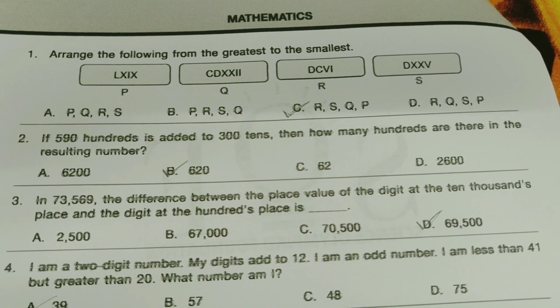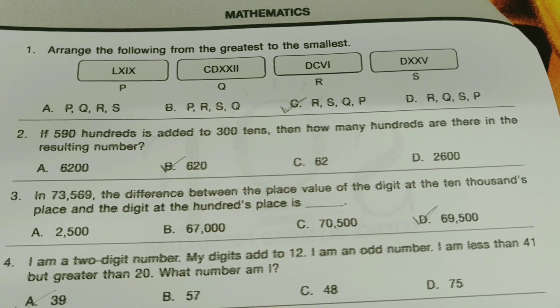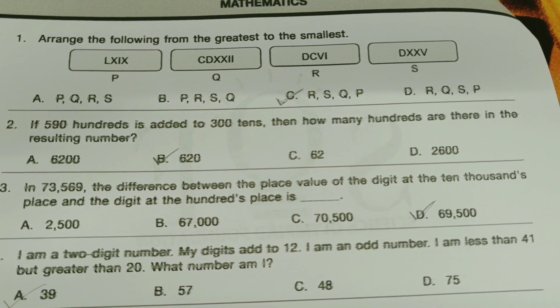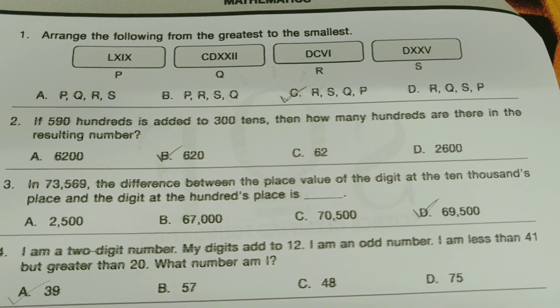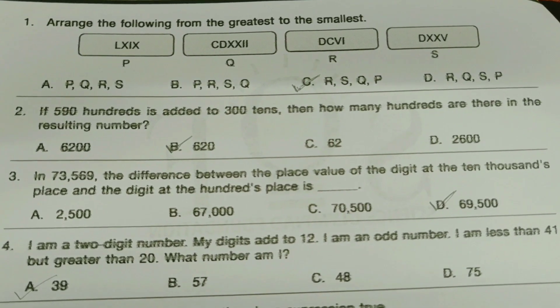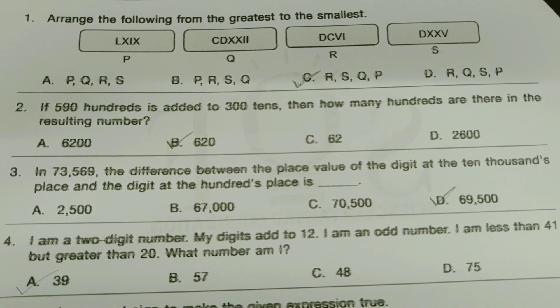If 590 hundredths is added to 3 hundred tenths, then how many hundredths are there in the resulting number? The answer is B.